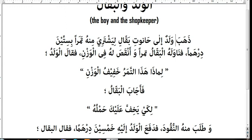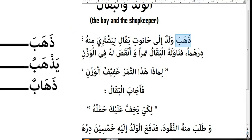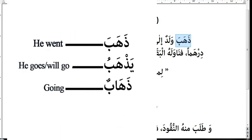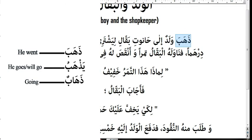For feminine, it would be 'thahabat,' meaning 'she went.' Thahabah means 'he went' — that is the madhiy (past tense). The mudhari form is 'yathabu,' which means 'he goes' or 'he will go.' In Arabic, the mudhari can mean the present as well as the future.